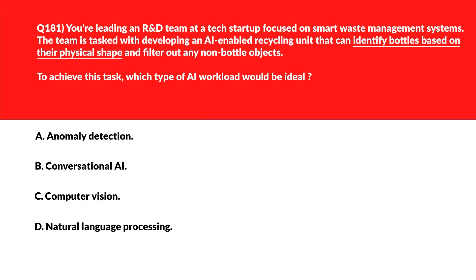Let's look at this question. We need to select the type of AI workload where we need to identify bottles based on their shape and filter out any non-bottle objects. Option A says anomaly detection — anomaly detection identifies pattern irregularities, not shape recognition. Anomaly means something abnormal or out of the ordinary, so this is incorrect.